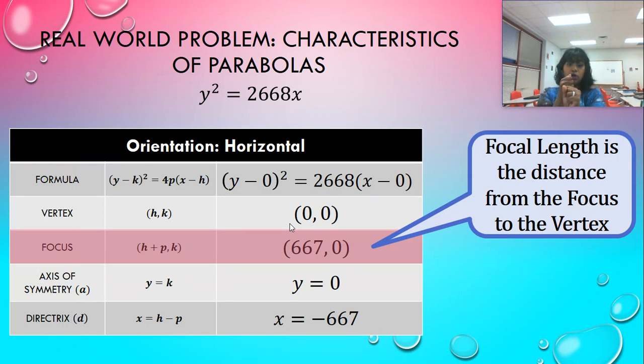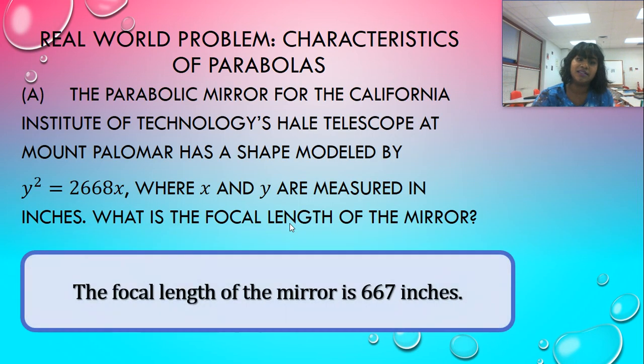Focal length is actually the distance from the vertex to the focus or from the focus to the vertex. So if I have a vertex at zero, zero, and I have a focus at X equals 667 comma zero, so all the way across the X axis, we are 667 units away. Okay. So guess what my focal length is? 667.